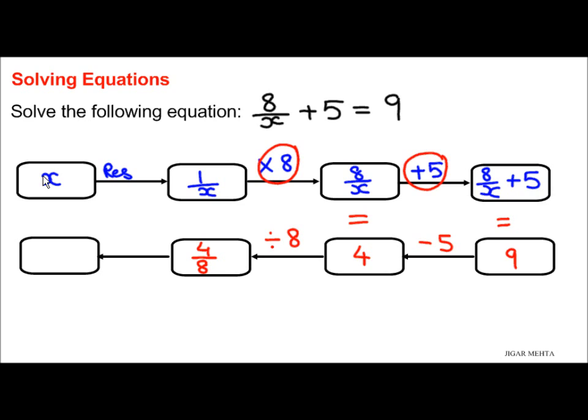Now next reciprocal, and the opposite operation of reciprocal will be again reciprocal. So I am going to take the reciprocal of 4 over 8, which gives me 8 over 4. Now 8 over 4 is actually 2. So x equals to 2. Thank you.